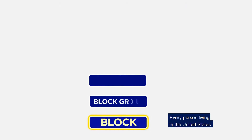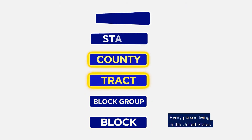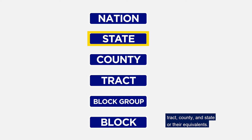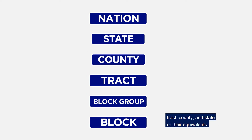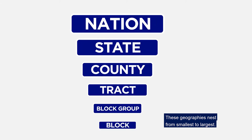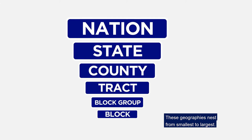Every person living in the United States resides in a census block, block group, tract, county, and state or their equivalents. These geographies nest from smallest to largest.